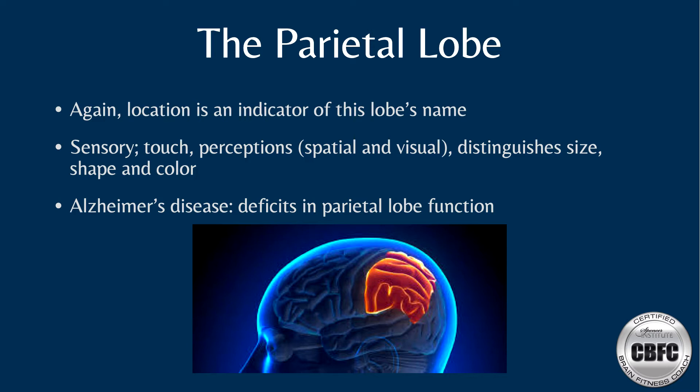The parietal lobe is vital for sensory perception and integration. It includes the management of taste, hearing, sight, touch, and smell, and is home to the brain's primary sensory area. Research has suggested that the more sensory input a region of the body provides, the more surface area of the parietal lobe is dedicated to that area — for example, the fingers and hands.